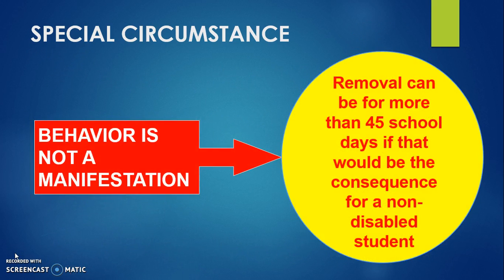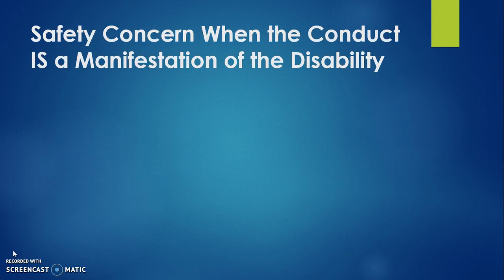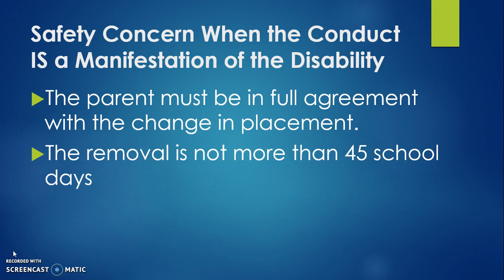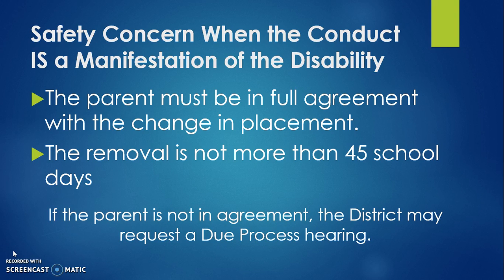Although we are allowed to place the student in a DAEP without regard to the behavior being a manifestation of the disability when the infraction is deemed a special circumstance, we must still proceed with the manifestation determination review process to determine if the student can be held to regular disciplinary standards after the 45-day removal. If the student's behavior is determined not to be a manifestation of the disability, then the student's disciplinary removal could be for more than 45 days if that would be the consequence for a non-disabled student. If the ARD committee determines that the infraction is a manifestation of the student's disability but the campus administrator has reason to believe the student's presence creates a safety concern, the parent must be in full agreement with the change of placement, and the removal can be no more than 45 school days. If the parent is not in agreement, the district may request a due process hearing. Only a hearing officer appointed by TEA may remove the student to an interim alternative education setting for not more than 45 school days in this situation.